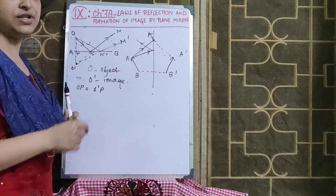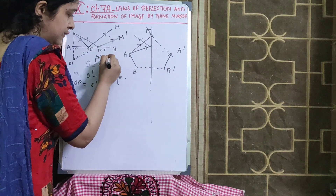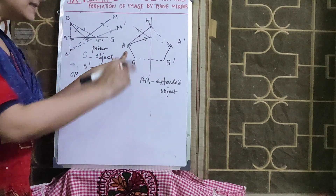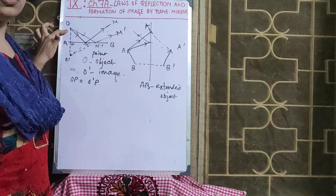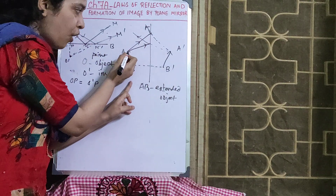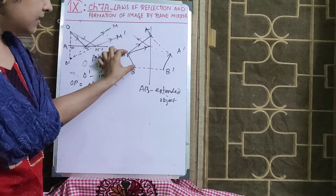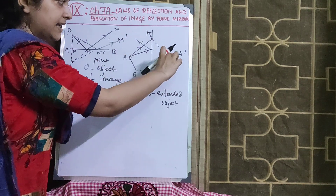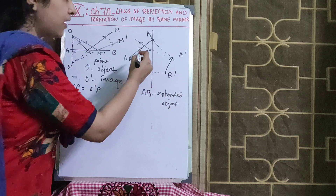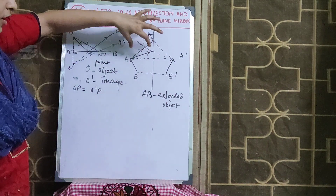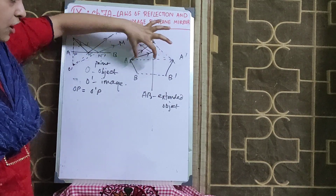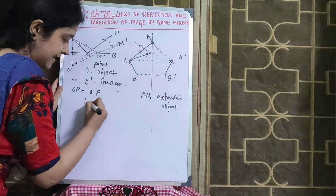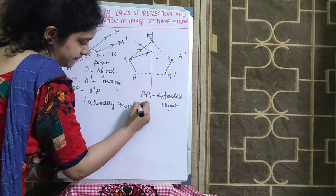Now for an extended object — AB is the extended object. The same principle that we followed for the point object O is true for all points lying on the line segment AB. For all the points, object distance equals image distance, and ultimately that is why we get a laterally inverted image in a plane mirror.